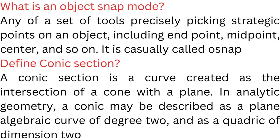What is an object snap mode? Any of a set of tools for precisely picking strategic points of an object, including end point, mid point, center, and so on. It is casually called snap.